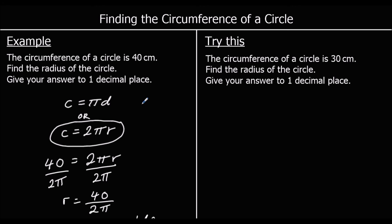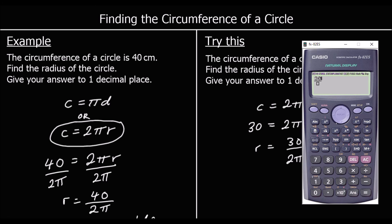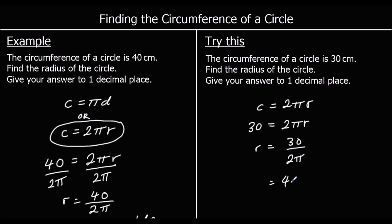One for you to try. The circumference of a circle is thirty centimetres. So 2πr = 30. Dividing both sides by 2π: r = 30 ÷ 2π. To one decimal place, that's 4.77..., which rounds up to 4.8 centimetres.